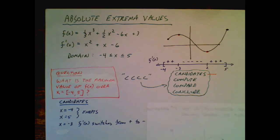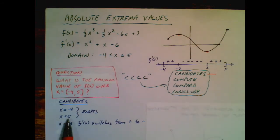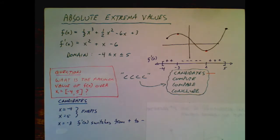For the candidates, I always have to list the endpoints. So negative 4 and 5 are both endpoints, so I need to include negative 4 and 5 as candidates. What this is saying is, I think the maximum value, the absolute maximum value, might occur at negative 4 or 5. Maybe I'm right, maybe I'm wrong.